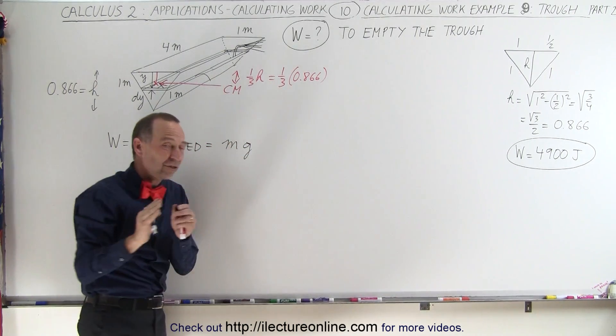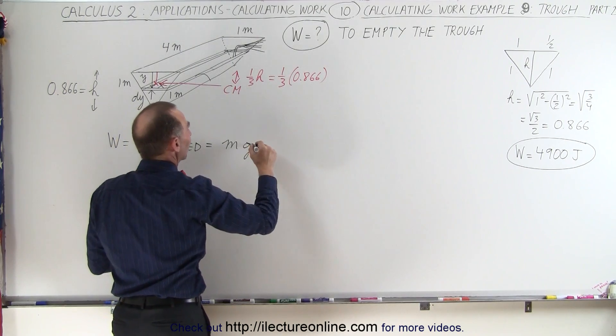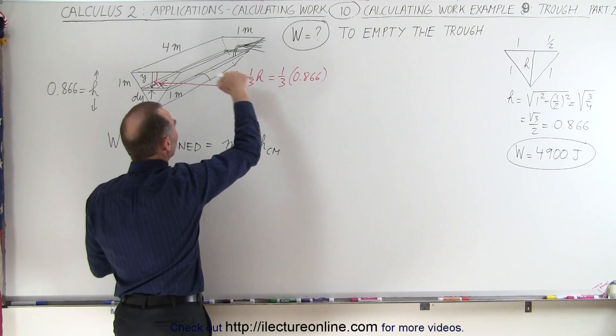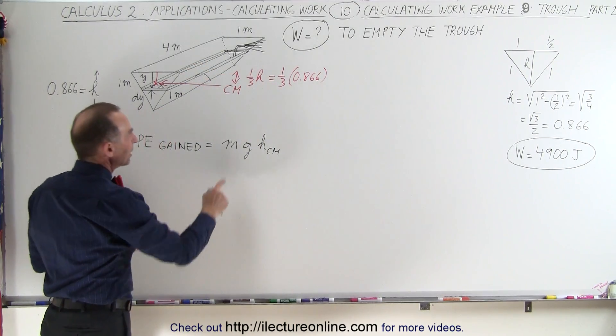The average height, or I shouldn't say the average height, but I should say the height by the center of mass, so h center of mass, which is what we're looking for here, that would be one-third the total height. We need to find the mass.